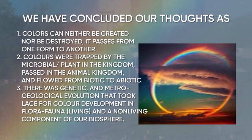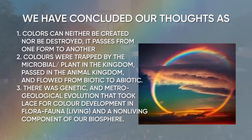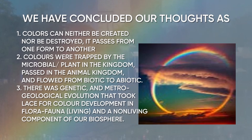Our thoughts can be concluded by these points: colors pass from one form to the other, as they can neither be created nor destroyed. Colors are trapped by microbial plants in nature and then further passed to animals. Finally, the flow of colors can be seen from biotic to abiotic components of our biosphere. The color development of flora, fauna, and abiotic components was due to genetic and geological evolution respectively.